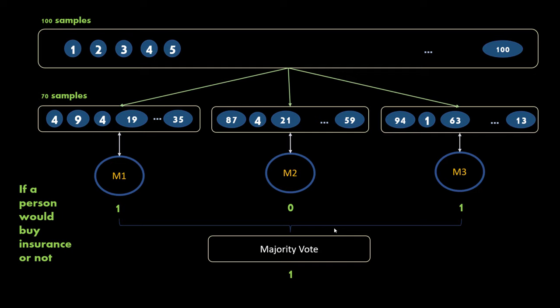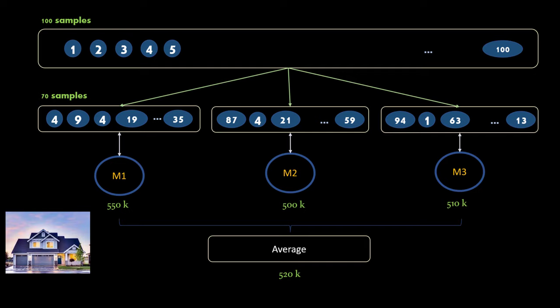The benefit here is that these individual models are weak learners — trained on a subset of the dataset, so they are less likely to overfit and will generalize better. When you combine the results of these weak learners you get overall a good quality result. This was the case of classification. The same thing applies for regression — for example, housing price prediction — where you take an average of the predictions from individual models.